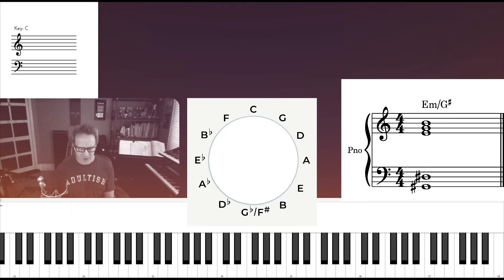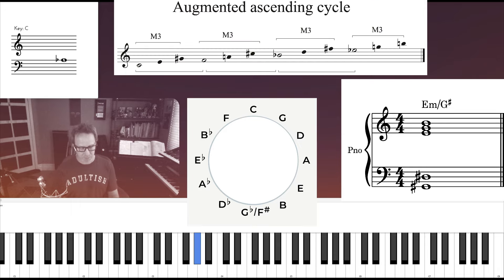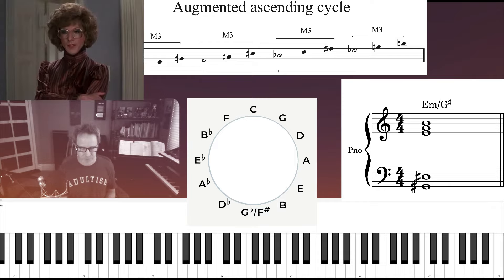Now the ascending augmented cycle is this: C augmented, F augmented, B flat, and E flat augmented. Another way to get through all 12 keys without using the circle of fifths. That's very convenient.